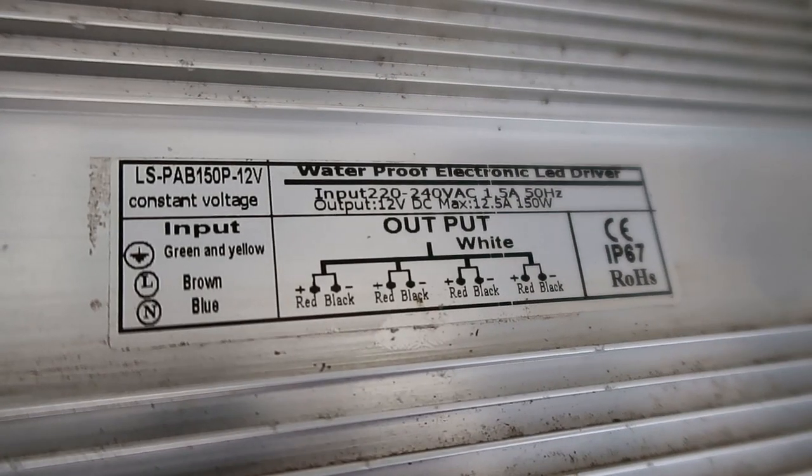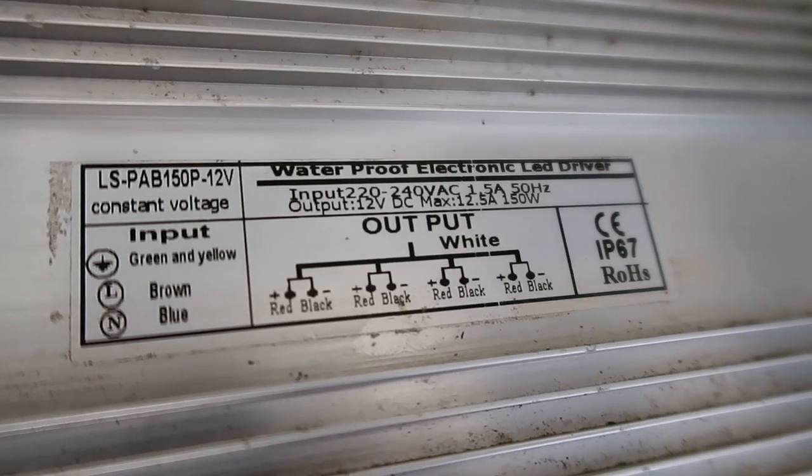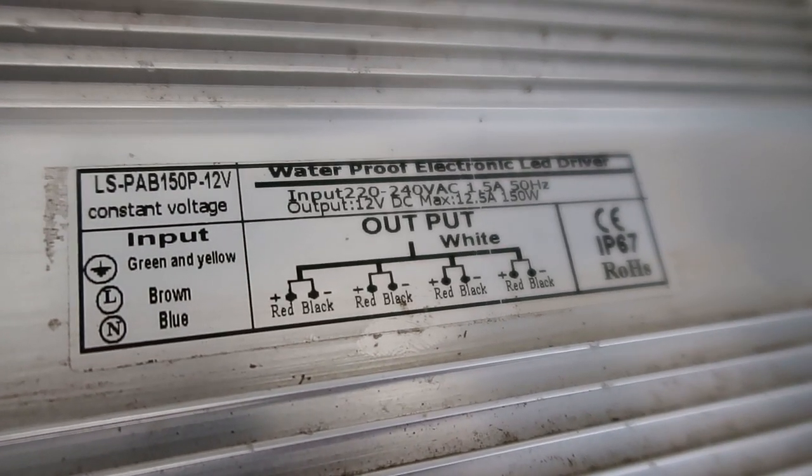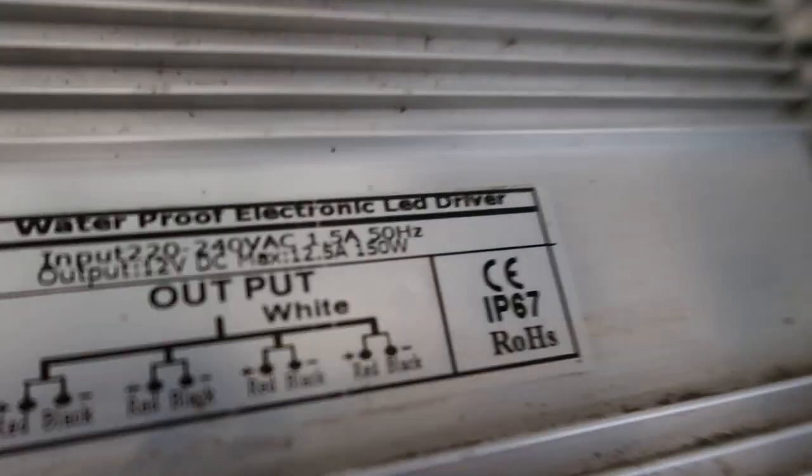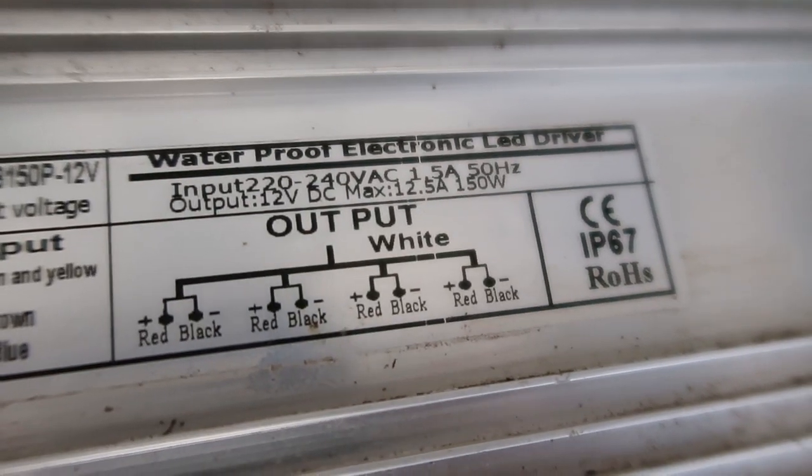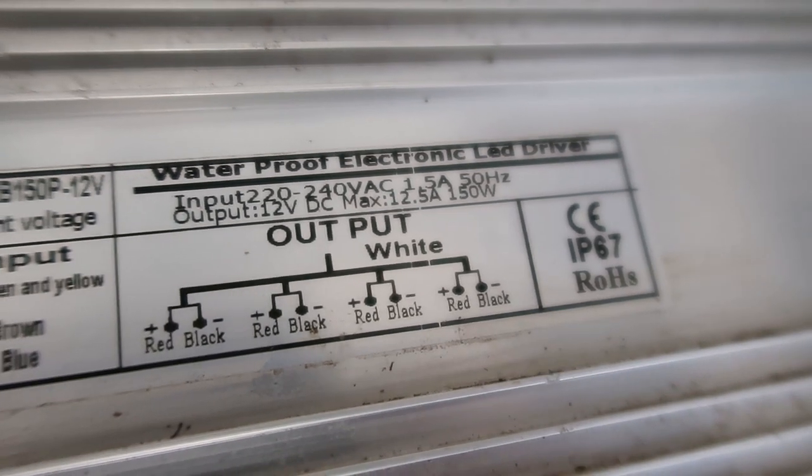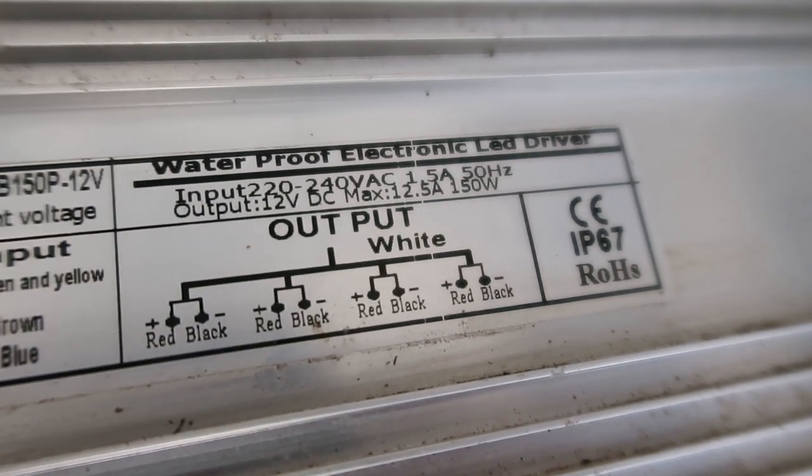So the power supply that I'm using here is just an LED driver power supply that you can also get from eBay. It's a 240 volt AC which then converts down to the 12 volt DC and a maximum of 12 and a half amps. So enough for what I'm actually using for this meter. If there was any more than that on this meter it would probably burn the meter out.